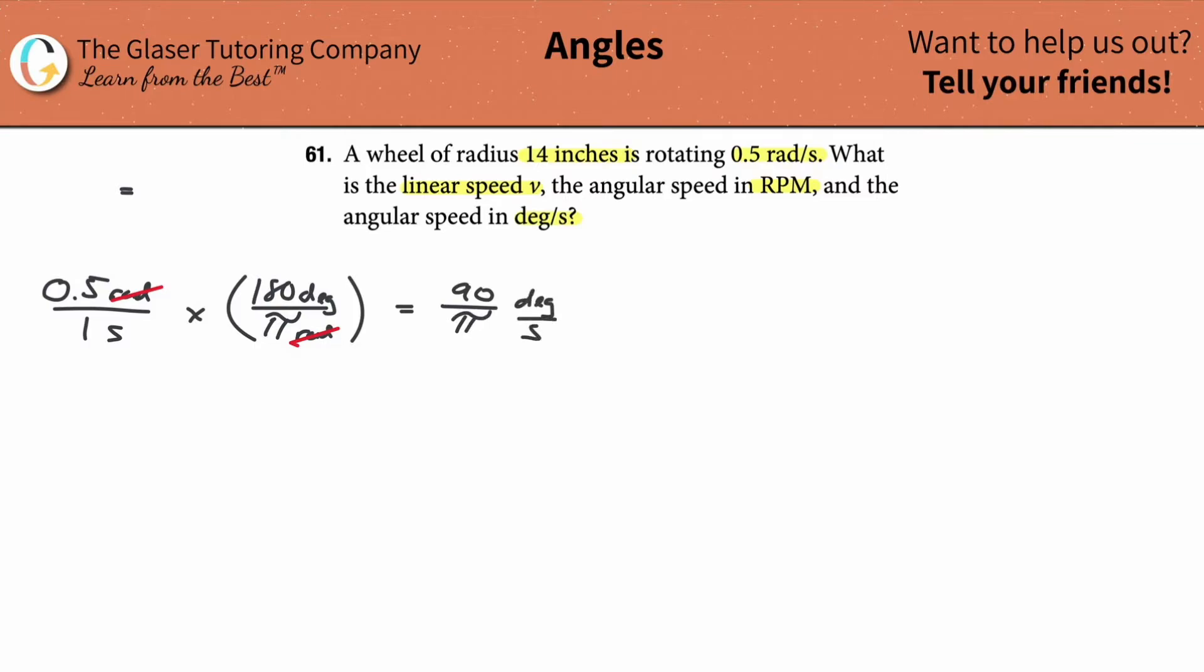Or you can throw this number on into the calculator if you want it, like 90 divided by 3, 30, right? So this would be like roughly a little less than 30 degrees per second. Up to you. But in any case, so that takes care of that.